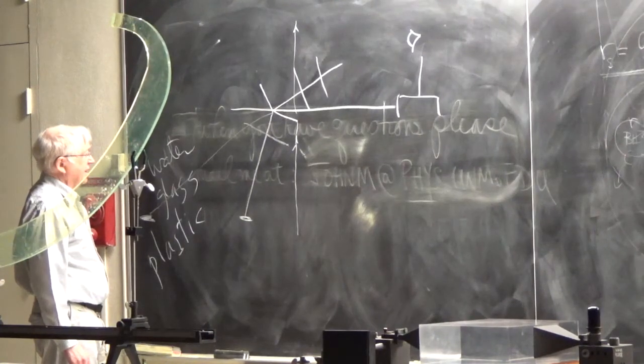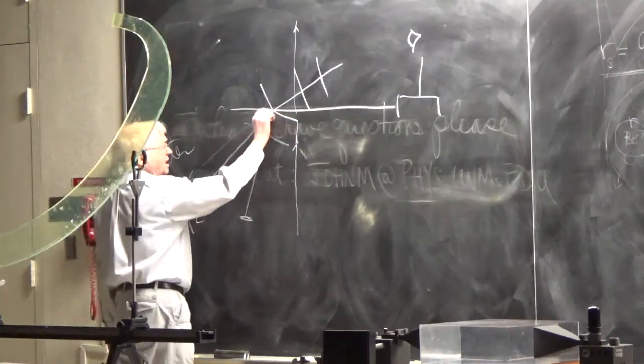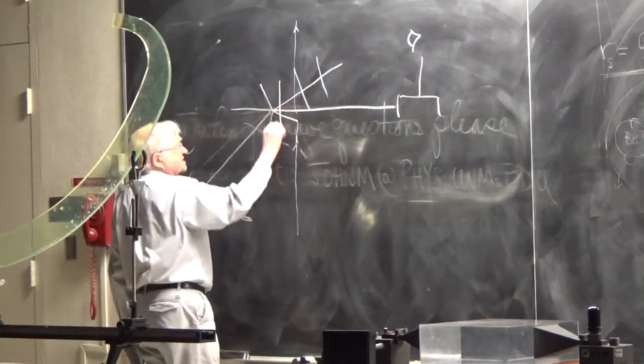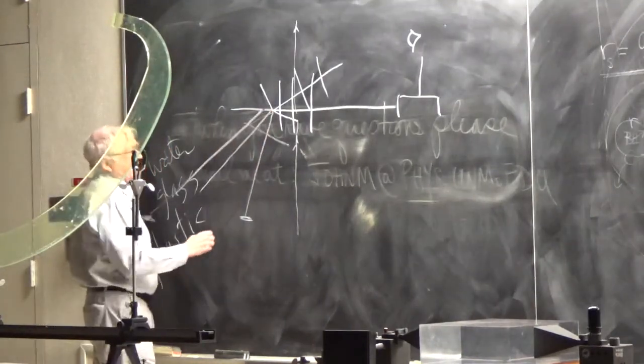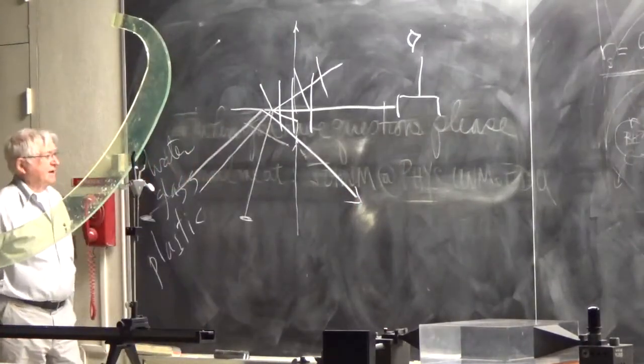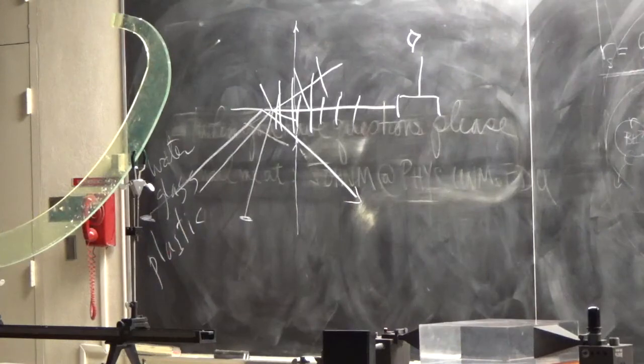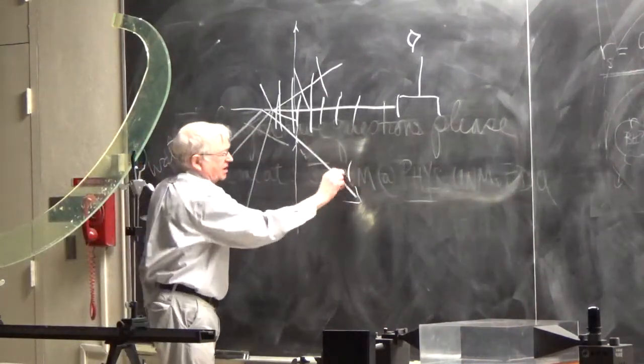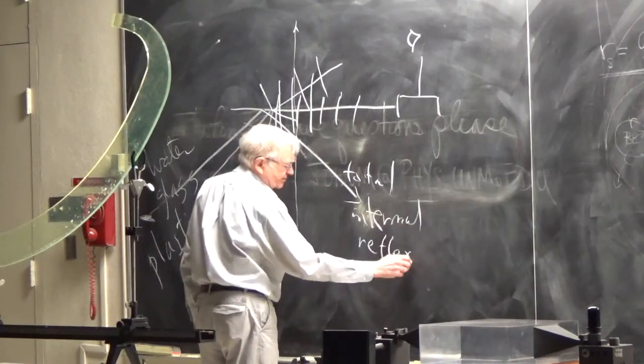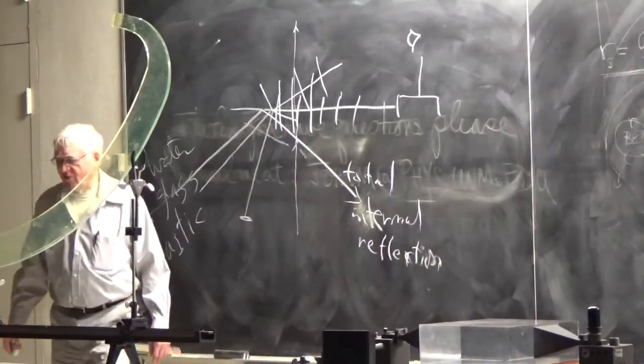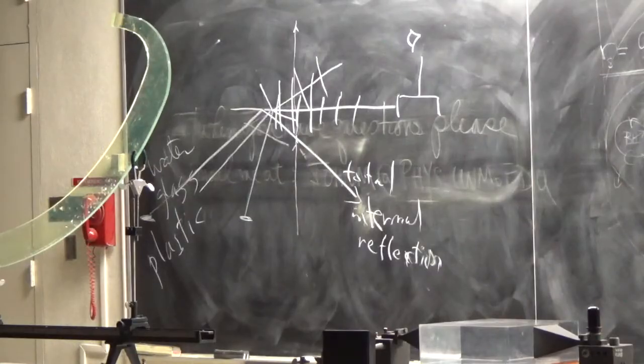As you get the angle closer to being parallel, then the wave starts going almost just skimming the surface. And then at a certain point, the wave doesn't go out at all. It just goes back into the water. The limiting case is when it comes up and the wave just shoots along the water. Just a fraction of a degree higher and then you have total internal reflection.